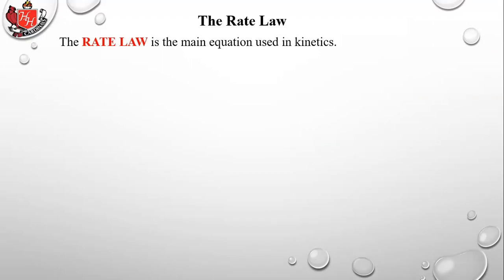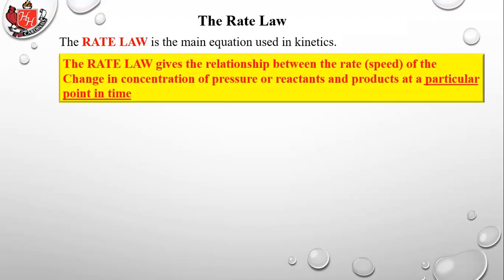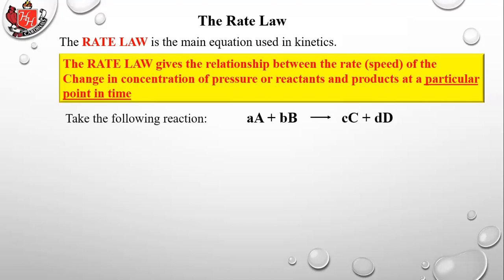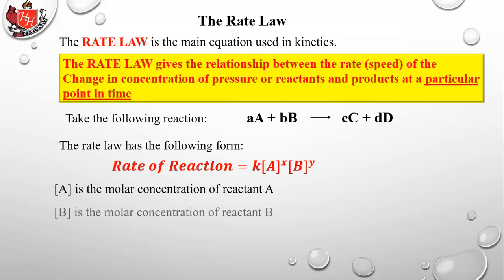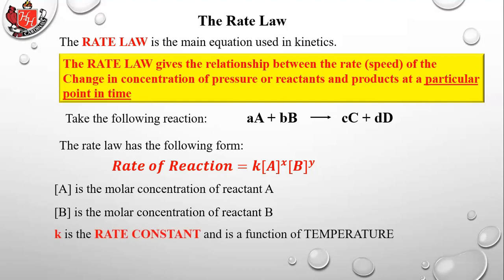The rate law is the main equation used in kinetics. It gives the relationship between the rate — the speed of change in concentration or pressure of reactants — and the products at a particular point in time. This is called the time-independent rate law. For a generic reaction, the rate law has the form: rate = K[A]^x[B]^y, where [A] and [B] are molar concentrations, K is the rate constant (mainly a function of temperature), and the exponents x and y are determined by experiment.